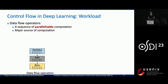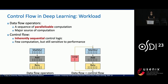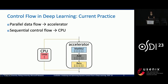In deep learning, models are expressed by a sequence of parallelizable operators. For example, this model contains a parallel matrix multiplication, a parallel addition, and a parallel regular operation. These operators form the main computational workload in deep learning models. On the other hand, control flow operations are inherently sequential. Although they contain few computation, they can significantly increase the execution time of a model. Existing approaches like PyTorch, TensorFlow, and Jax choose to execute the data flow operators on accelerators and control flow operations on CPUs. This is because data flow operators have good parallelism and align with the parallel architecture of accelerators. But control flow is inherently sequential and with complex execution logic, so they cannot be efficiently run on accelerators and have to be run on CPUs.